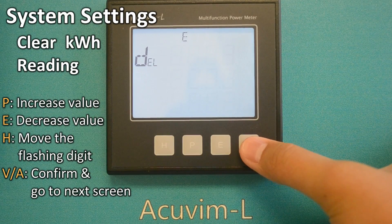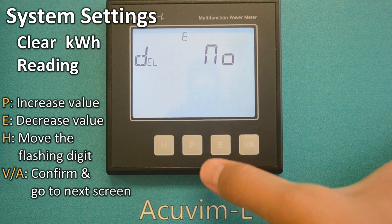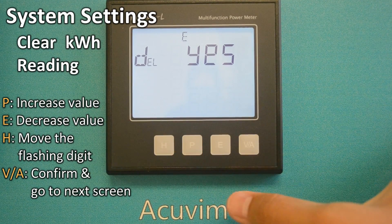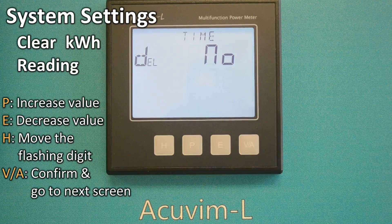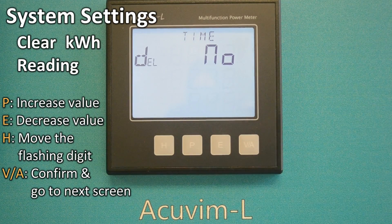Confirm, change no to yes, then confirm. The kilowatt hour reading will now be cleared.